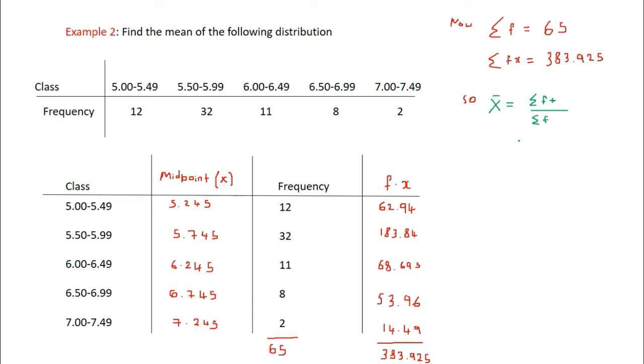So x bar equals 383.925 over 65, which gives an x bar of 5.91. And that's it for this video guys, thanks for watching.